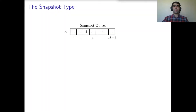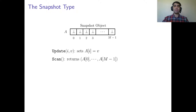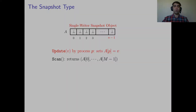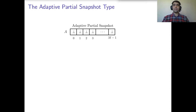Formally, a snapshot object maintains an array of m elements and supports two operations: update(i, v), which sets the value of the ith component to v, and scan, which returns the view of the entire array. In the single-writer snapshot object, the number of components is equal to the number of processes, and process p can only update the value of the pth component.